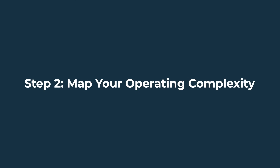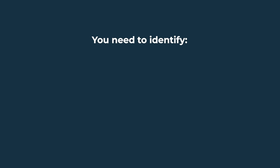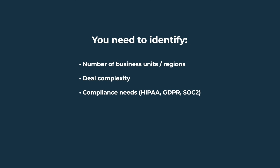Step two: map your operating complexity. Are you a five-rep startup with one pipeline, or a three-region sales team with layered territories and SLAs? You need to identify number of business units and regions, deal complexity, compliance needs — HIPAA, GDPR, SOC 2, etc. — and volume of touch points and data sources.